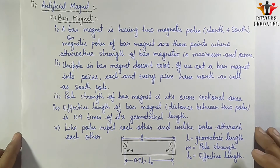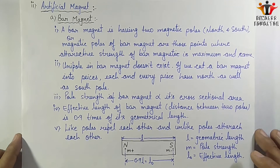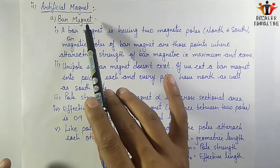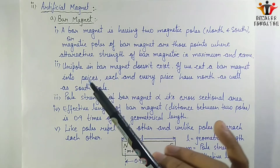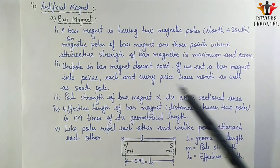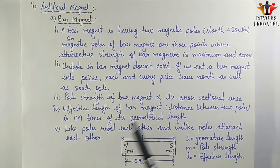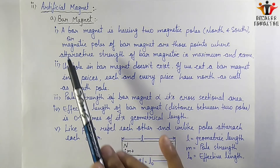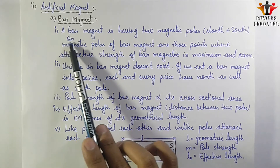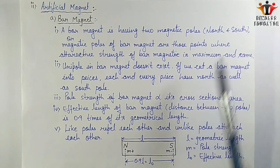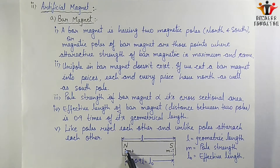Next is artificial magnets. Among artificial magnets, we will first study the bar magnet. A bar magnet looks like a stick or rectangular bar. A bar magnet has two magnetic poles — north and south. The magnetic poles of a bar magnet are the points where the attractive strength is maximum.